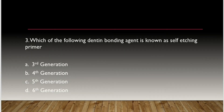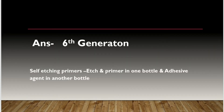Which of the following dentin bonding agents is known as a self-etching primer? Third, fourth, fifth, or sixth generation? The answer is sixth generation. In sixth generation dentin bonding agents, etch and primer are in one bottle and the adhesive agent is in another bottle — it is known as self-etching primers.